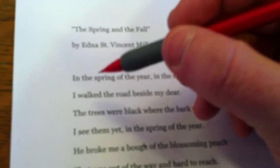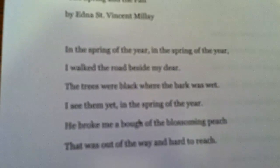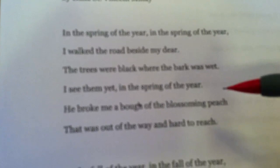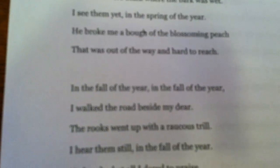In the spring of the year, in the spring of the year, I walked the road beside my dear. The trees were black where the bark was wet. I see them yet in the spring of the year. He broke me a bough off the blossoming peach that was out of the way and hard to reach. In the fall of the year, in the fall of the year, I walked the road beside my dear. The rooks went up with a raucous trill. I hear them still in the fall of the year. He laughed at all I dared to praise and broke my heart in little ways. Year be springing or year be falling, the bark will drip and the birds be calling. There's much that's fine to see and hear, in the spring of a year, in the fall of a year. 'Tis not love's going hurts my days, but that it went in little ways.